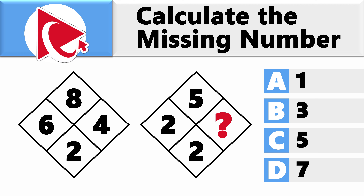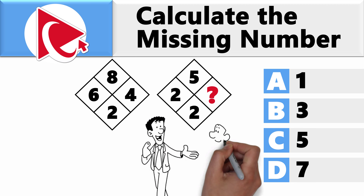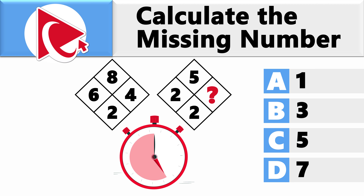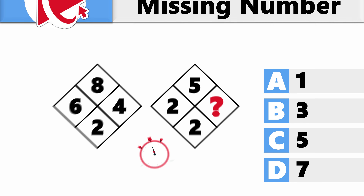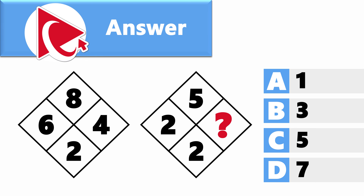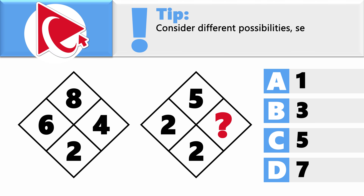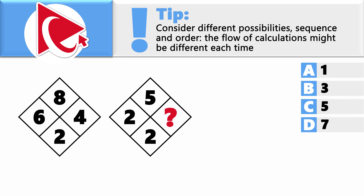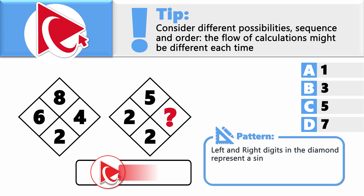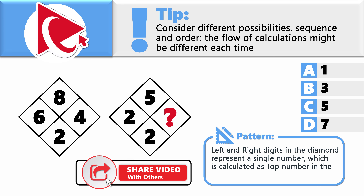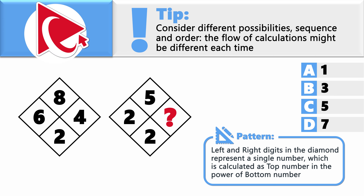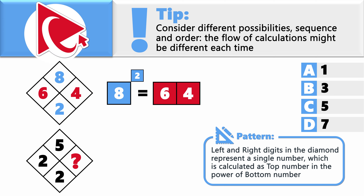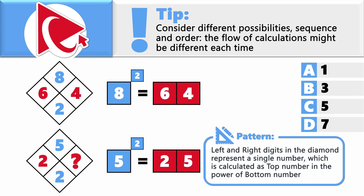Investigate closely and determine the solution. The key is to determine the pattern by considering different sequences and orders — the flow of calculation may not be the same each time. The left and right digits represent a single number calculated as the top number raised to the power of the bottom number. In the first diamond: 8 to the power of 2 is 64. For the missing value: 5 to the power of 2 is 25. The correct answer is Choice C, 5.